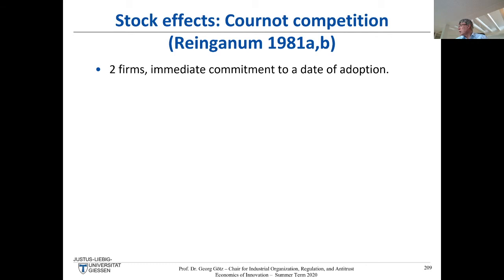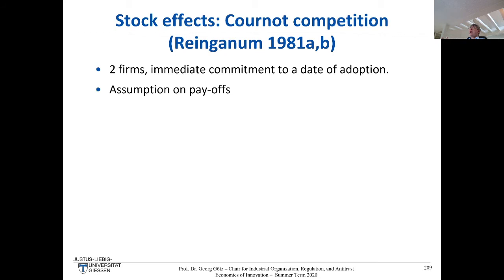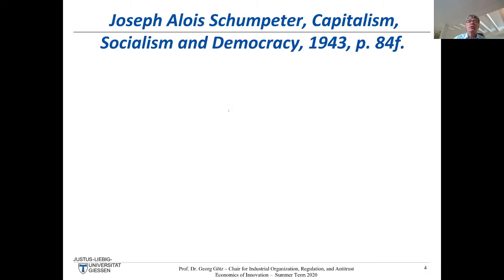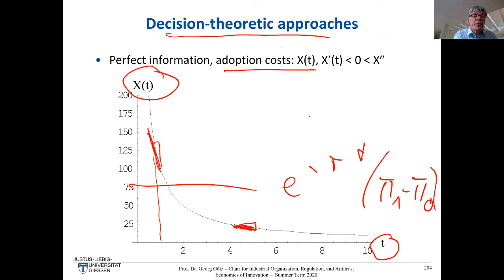In Reinganum's first paper she simply assumed a duopoly. The duopolists decide today at which time they want to have a new technology available — think of introducing an SAP system, which requires an implementation process, not something you can do overnight. The adoption cost function is again the decreasing one. If you want to implement in only three years, it costs more than if you take four years — similar to vaccine development: faster requires more spending.